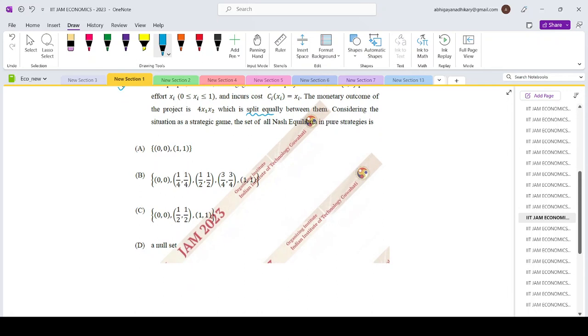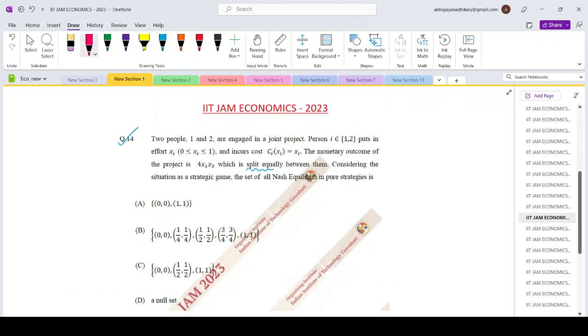So the total outcome is 4x1x2 which is to be split as 2x1x2 and 2x1x2, correct? Provided the x1 and x2 are greater than 0. Because only in that case will we have a positive total outcome which will be split. Given in the question that the cost incurred by both agents is ci(xi) = xi.